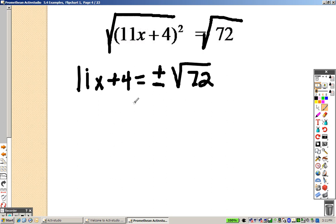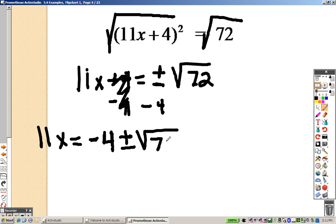Well, before I simplify that, to get x by itself, since it's a positive 4, I need to subtract 4. So I subtract 4 on both sides to get rid of that. So now I have 11x equals, and whenever you're doing this, put the numbers out in front of the plus or minus. It'll make your job a little simpler.